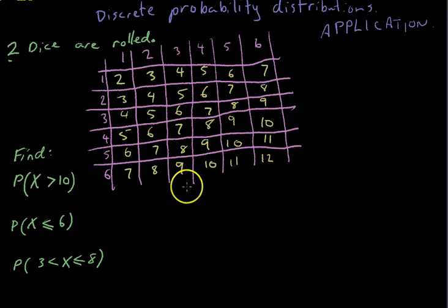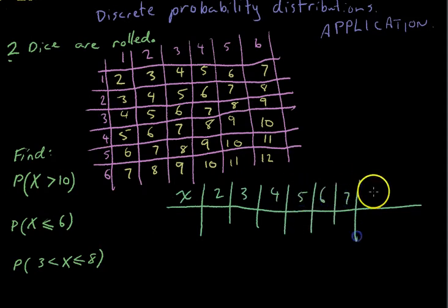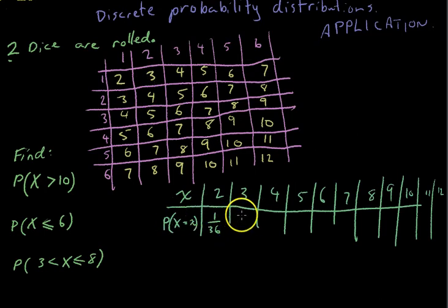Now we can draw up our probability distribution. X represents all the different things that can happen, so you can get a 2, a 3, a 4, a 5, and so on. Then the probability of each of those happening — P(X = x). There's only one way to get a 2, so that's 1 in 36. There are two ways to get a 3, so that's 2 in 36 or 1 in 18. There are three ways to get a 4, so that's 3 in 36 or 1 in 12. Continue on like that.